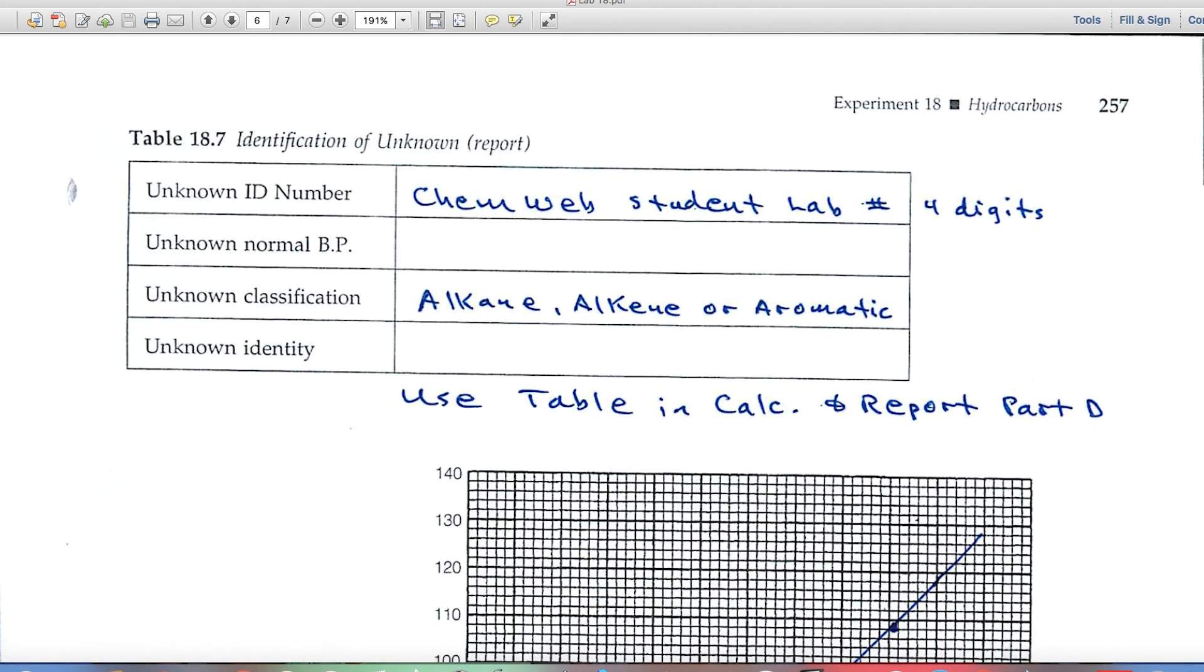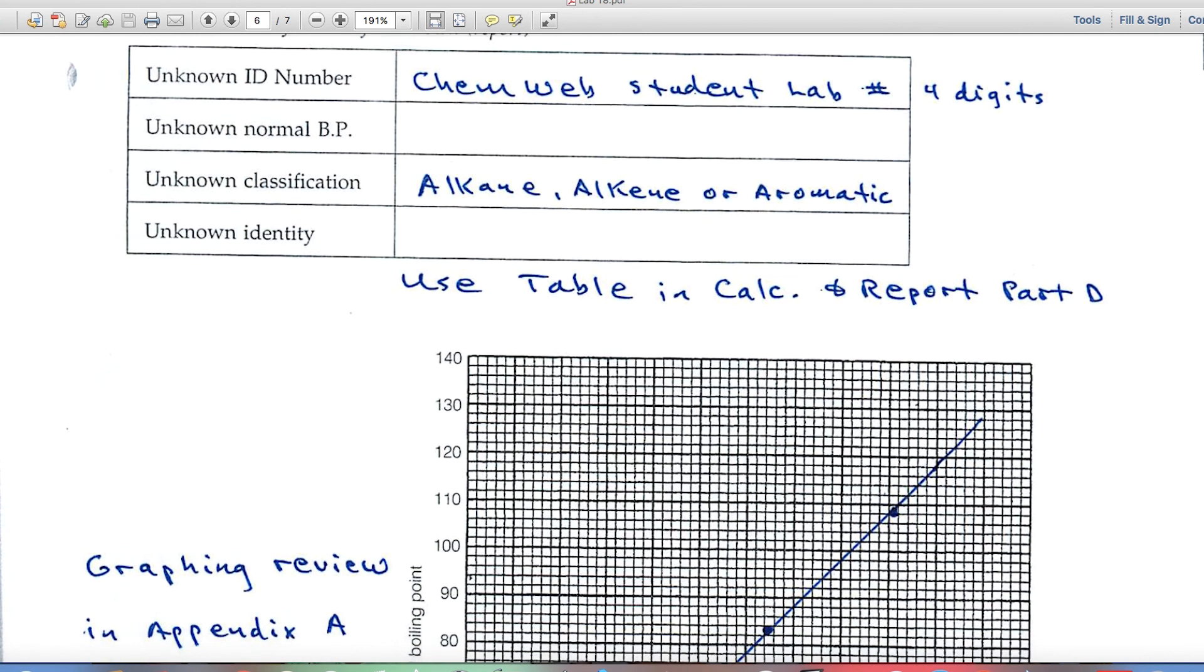So again, identifying your unknown is a critical part of the experiment. Be sure that you've identified it correctly, as far as its classification. And then just look within that column, whichever one of these three you think it is, and pick out the boiling point that comes closest to one of those values.